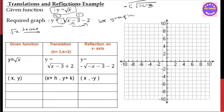Then d plus is minus 2. This is d minus. This is the translation. So this is root x minus 3 plus 2. So root x minus 3 plus 2.